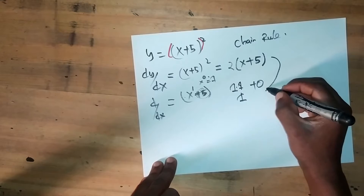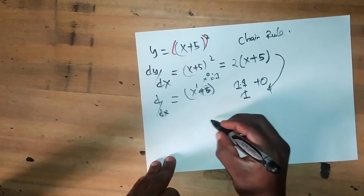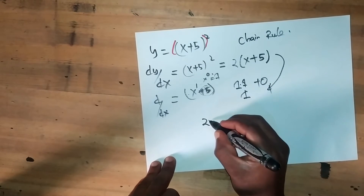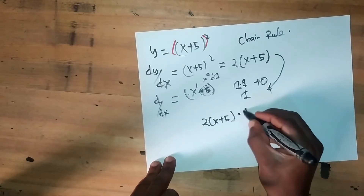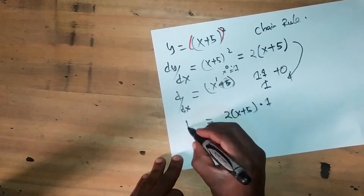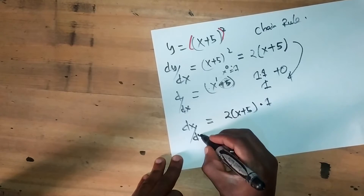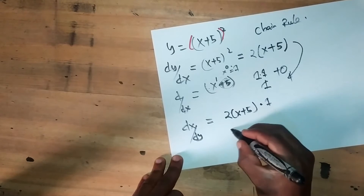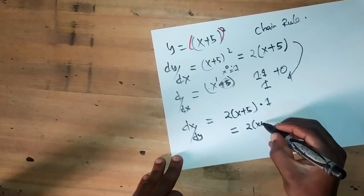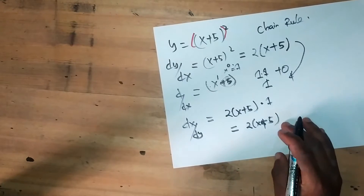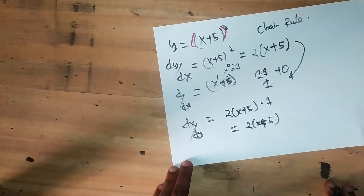The derivative of the outer function multiplied by the derivative of the inner function gives us 2(x + 5) multiplied by 1. So the final output will become dy/dx = 2(x + 5). This is how we apply the chain rule.